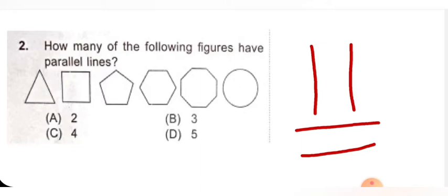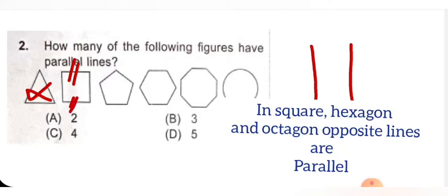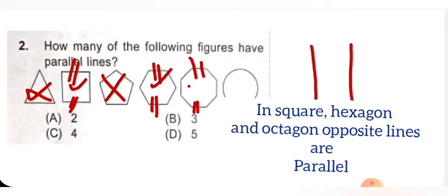Now let's observe which figures have parallel lines. In the triangle, it is not parallel. In the square, it is both. It is not in the pentagon. In the hexagon, these lines are parallel. In this octagon, these lines are parallel. So how many figures are there? 1, 2, 3. Option B is correct for this.